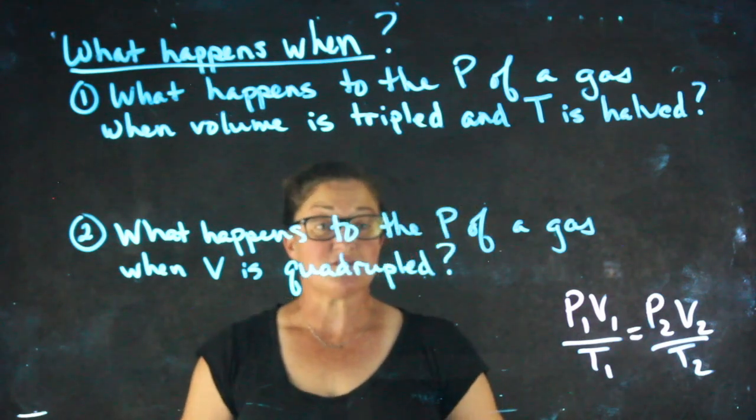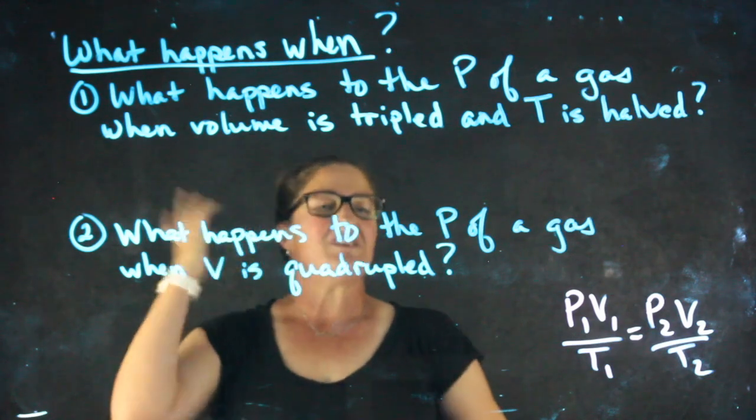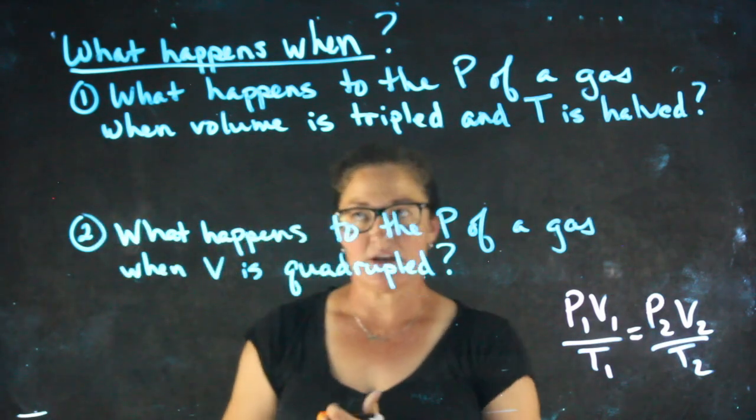We call this type of problem 'what happens when?' And it's a qualitative question where you need to attach a number to it, but you're not given any real specific numbers.